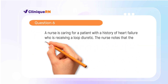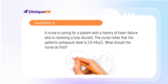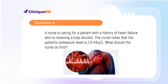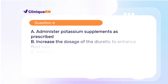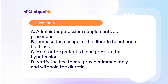Question 6. A nurse is caring for a patient with a history of heart failure who is receiving a loop diuretic. The nurse notes that the patient's potassium level is 2.9 mEq per liter. What should the nurse do first? A. Administer potassium supplements as prescribed. B. Increase the dosage of the diuretic to enhance fluid loss. C. Monitor the patient's blood pressure for hypotension. D. Notify the healthcare provider immediately and withhold the diuretic.